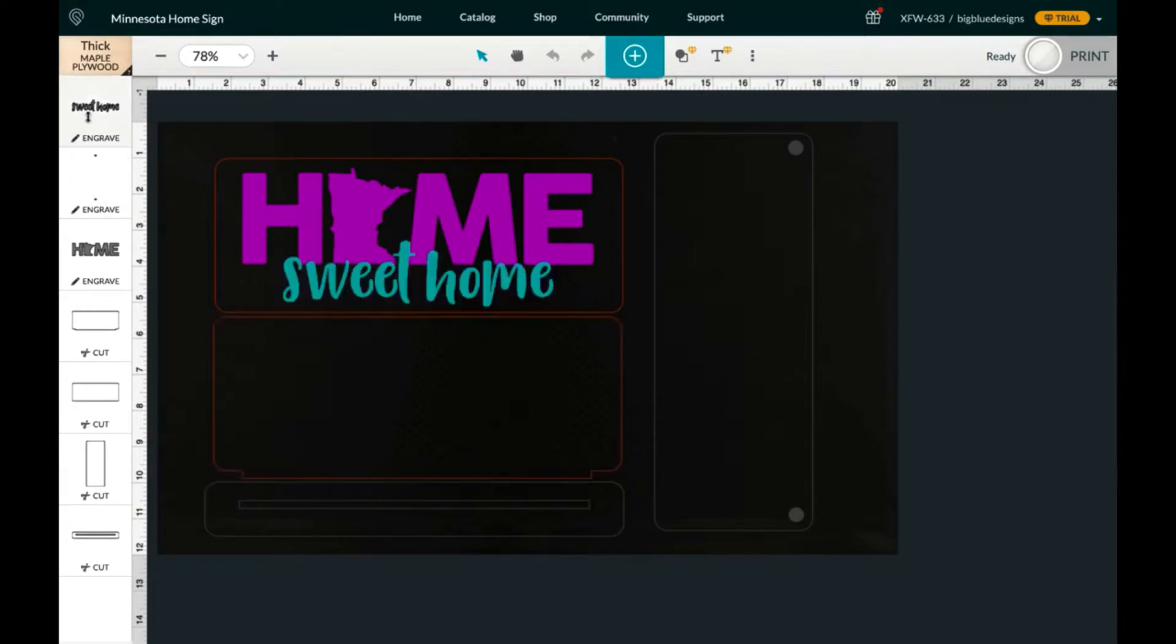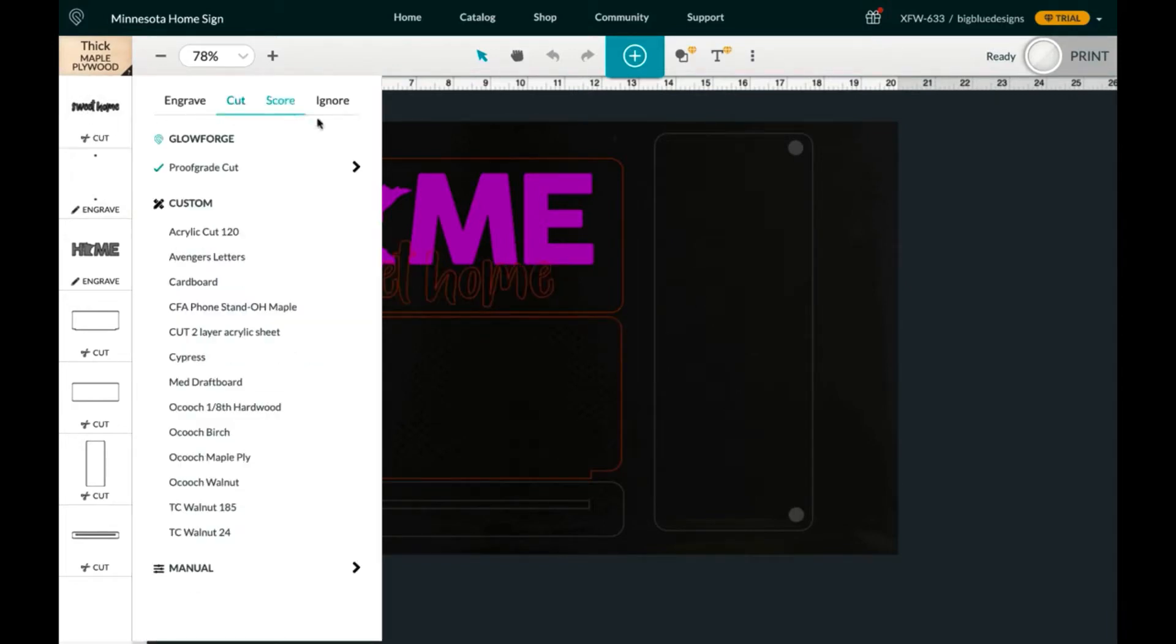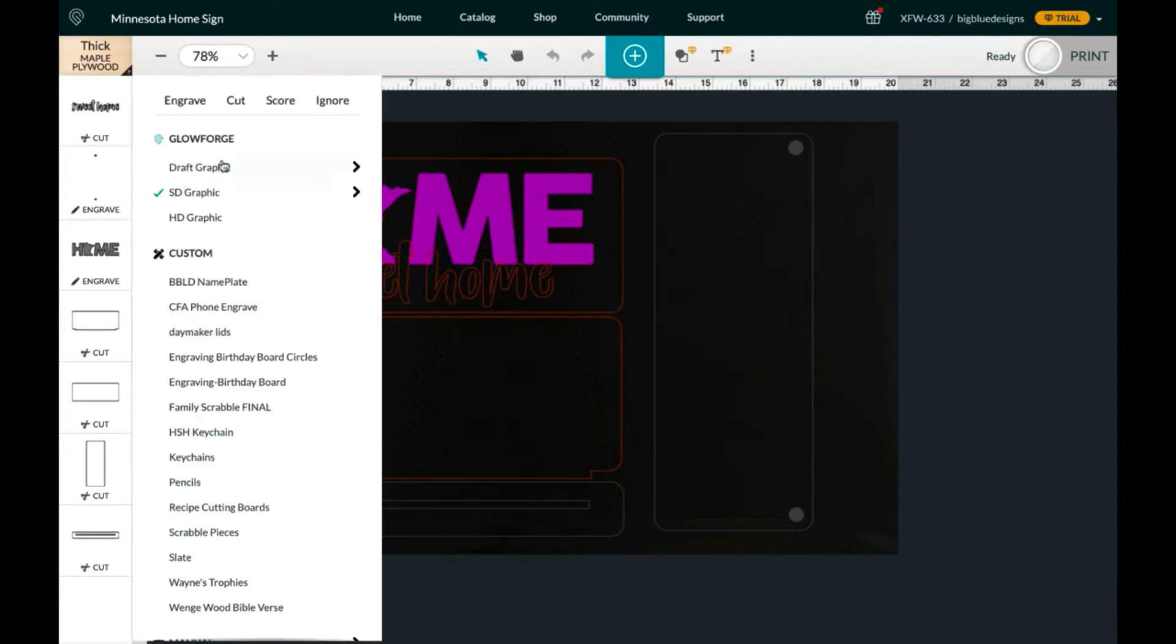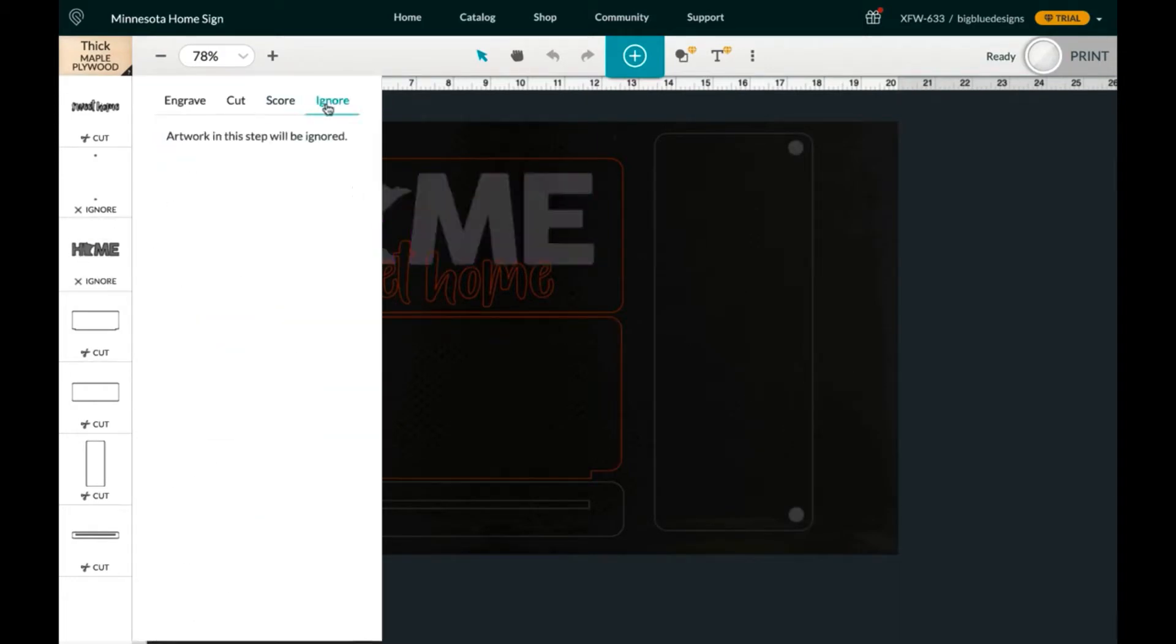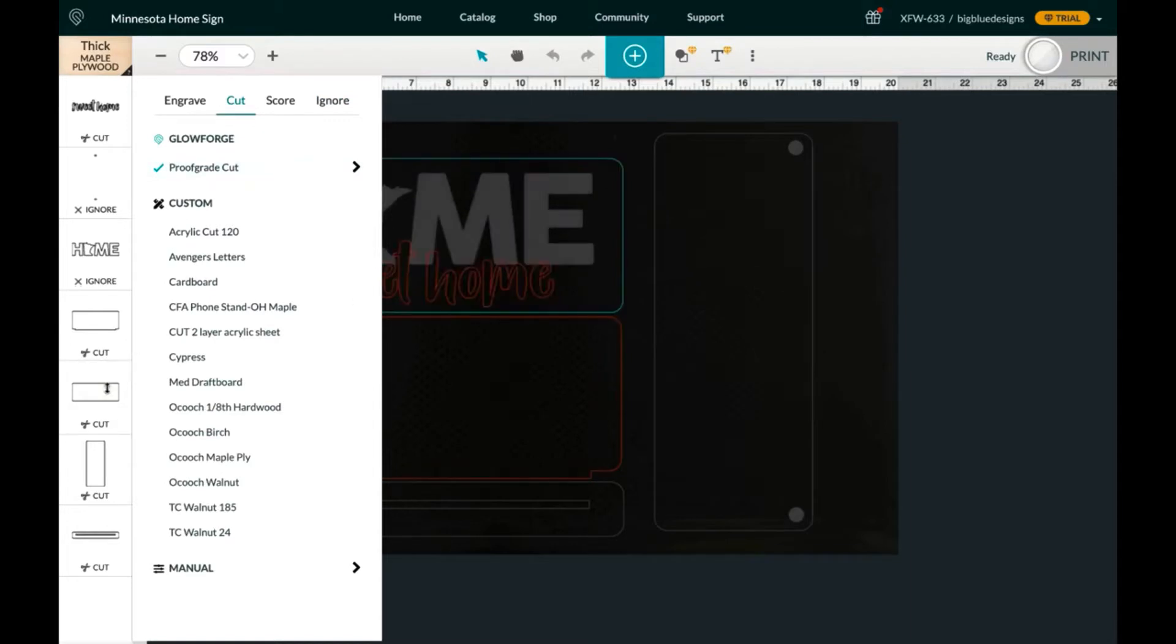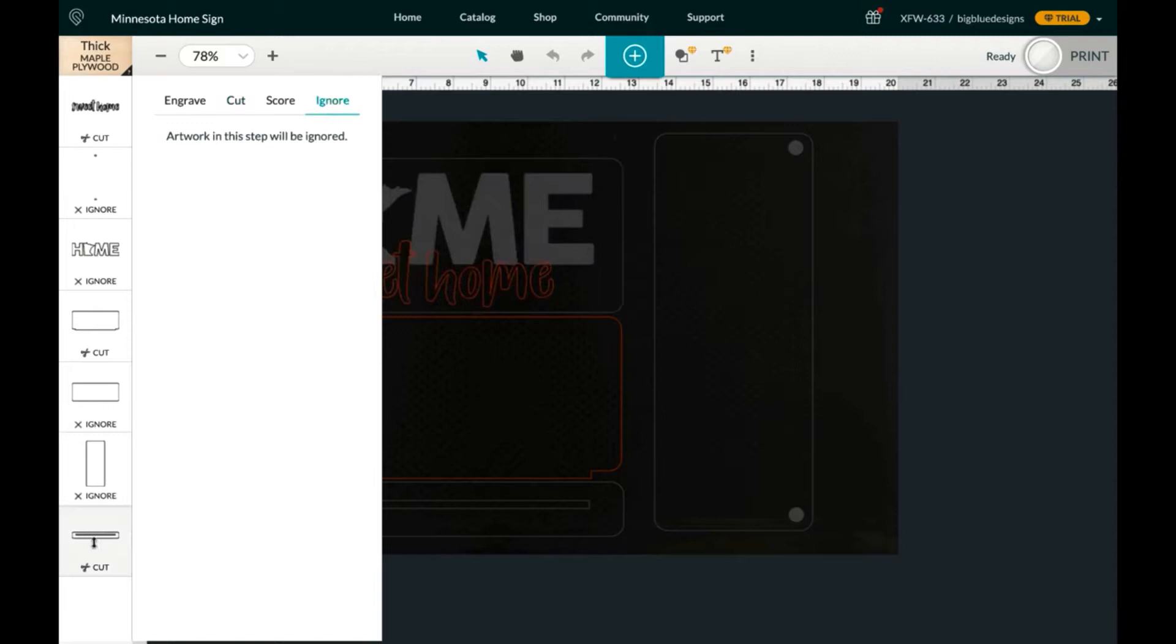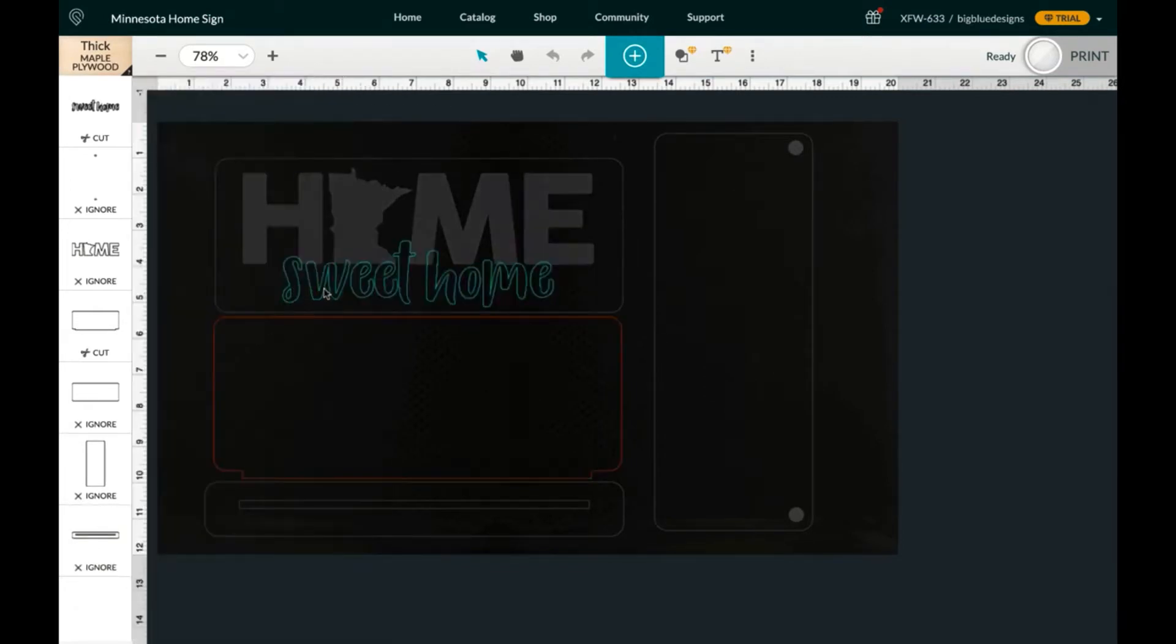So working from the top, Sweet Home is going to be cut, and these are the two circles over on this side—I don't need that. Home, I'm going to ignore that one. I'm going to cut this one, I'm going to ignore this one, I'm going to ignore, and the base I'm going to ignore. So all I've got is Sweet Home to cut out and then the back piece.